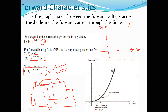The voltage at which the depletion layer is depleted or collapsed is known as the cut-in voltage, also called the knee voltage. After this point, a large current starts flowing through the junction. Once the depletion layer collapses, the current is exponentially related to the voltage as per the diode equation.